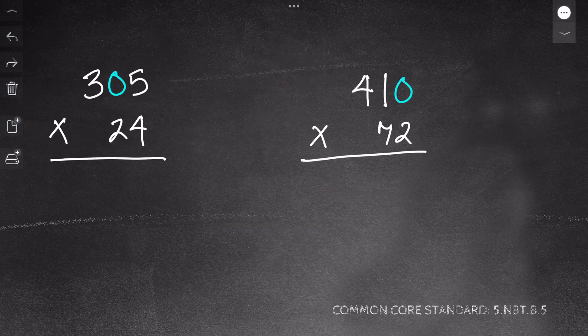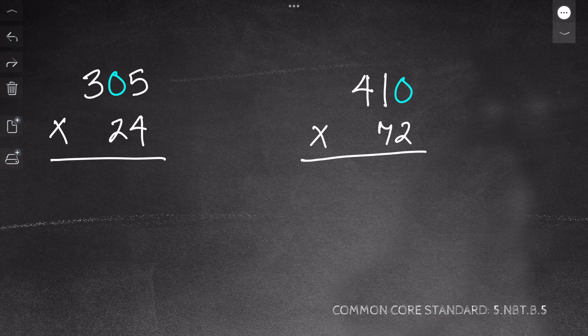For my first problem, I have 305 times 24, and you can notice I have a zero right there.